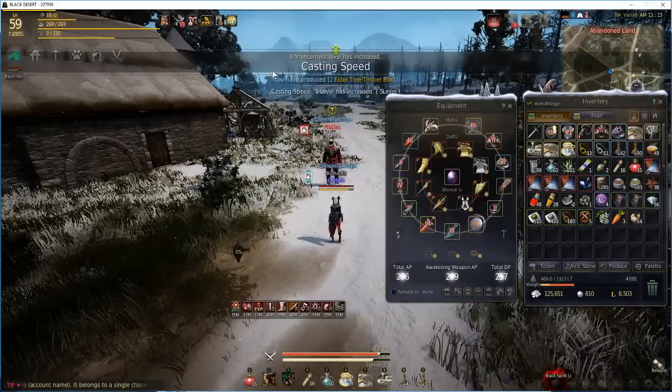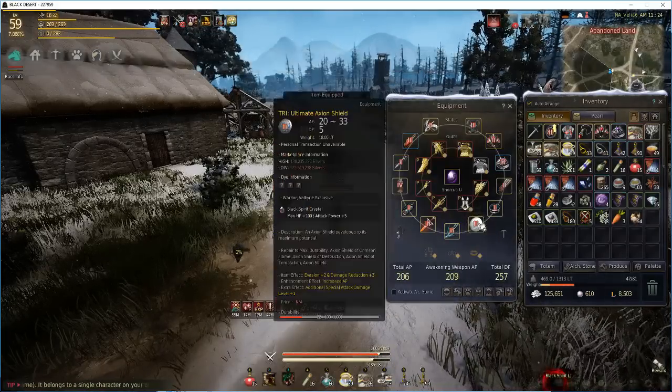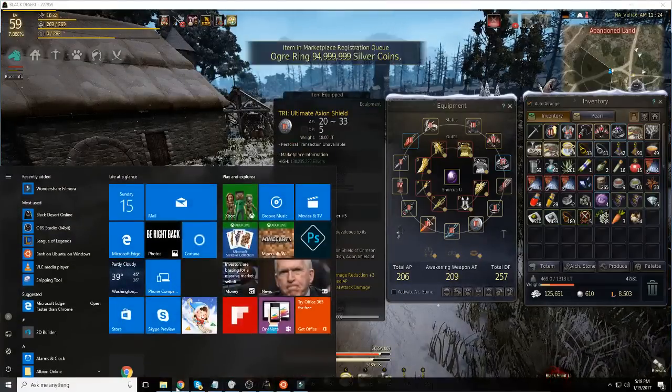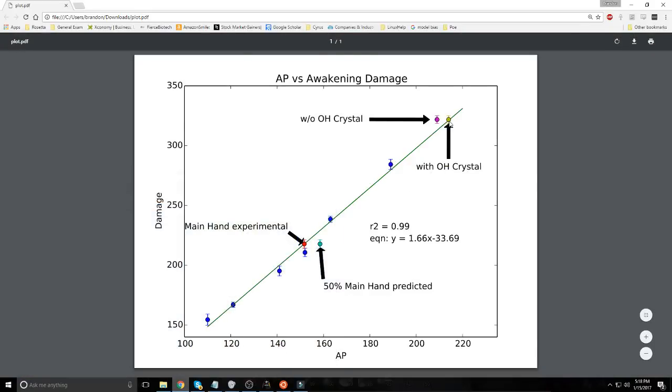So 209 AP. If we assume that it's giving 214 AP because of that attack power plus 5, we get this point on the graph. As you can see, it fits up very nicely with our linear correlation, indicating that it is in fact the case that the offhand awakening crystal contributes to awakening weapon damage. So there you go.